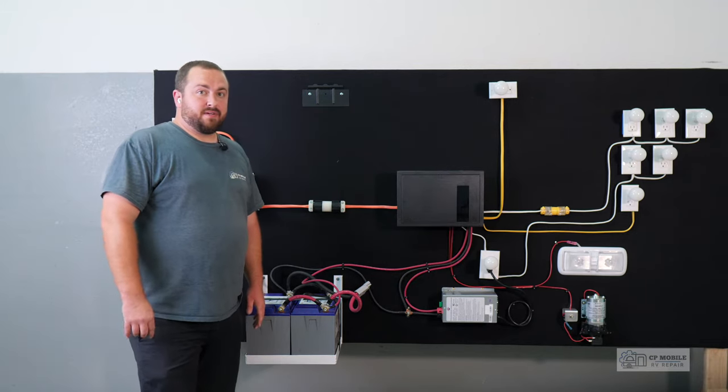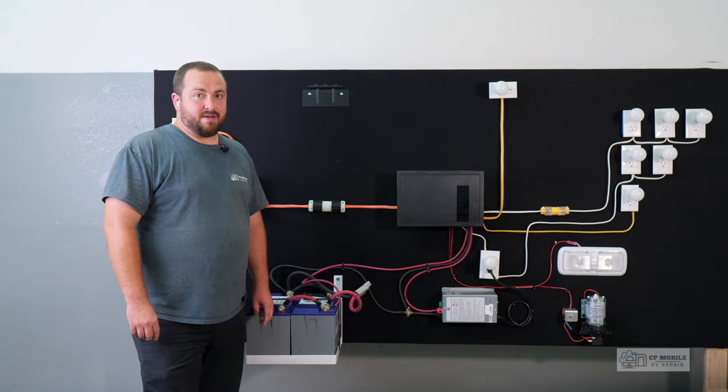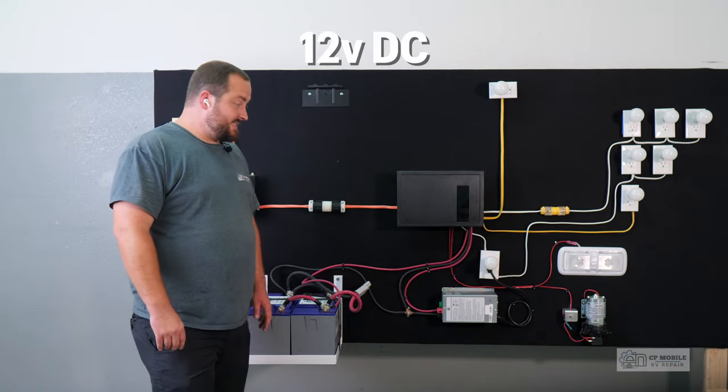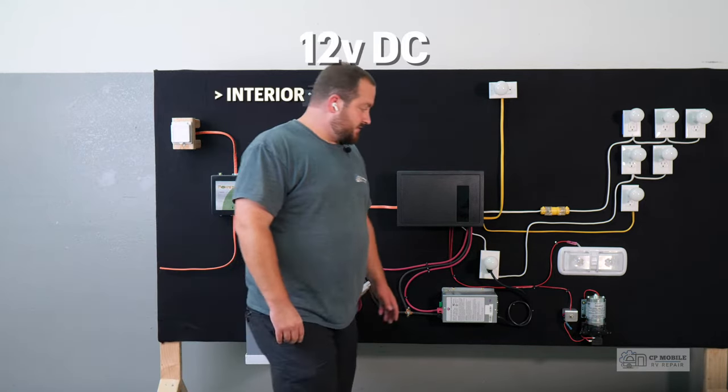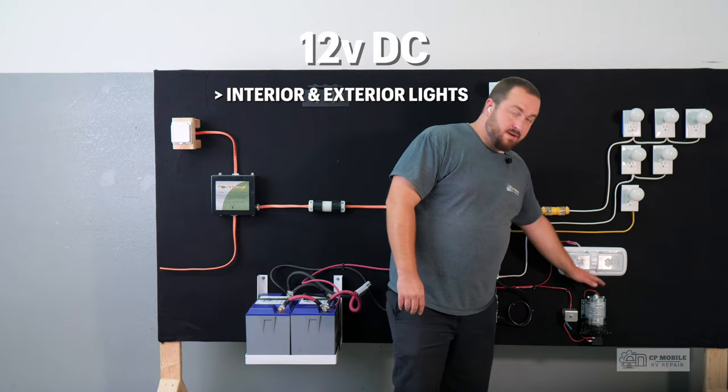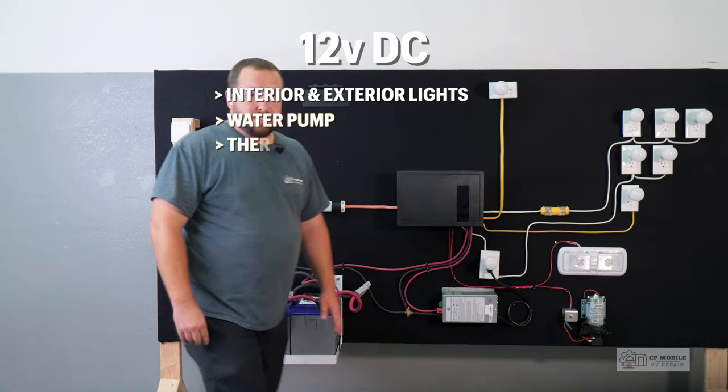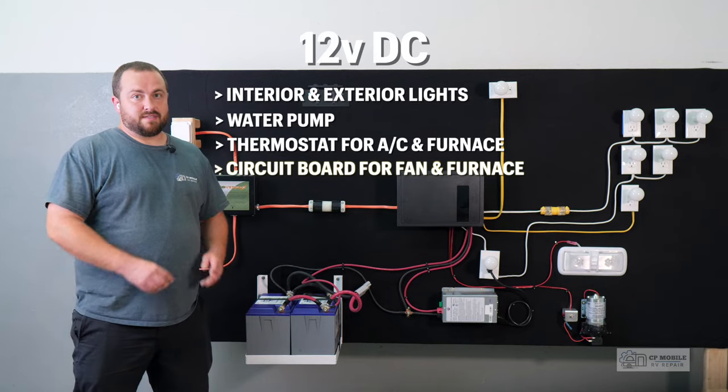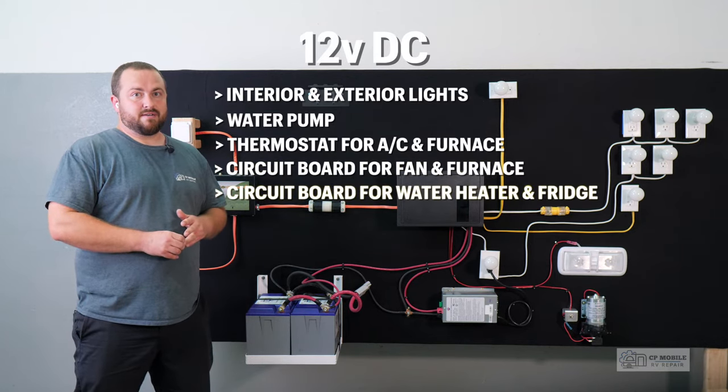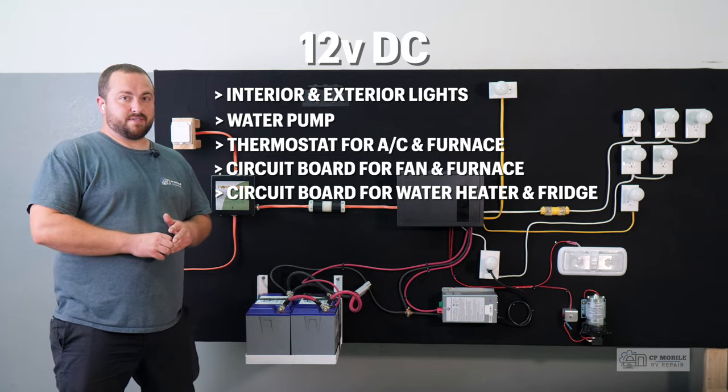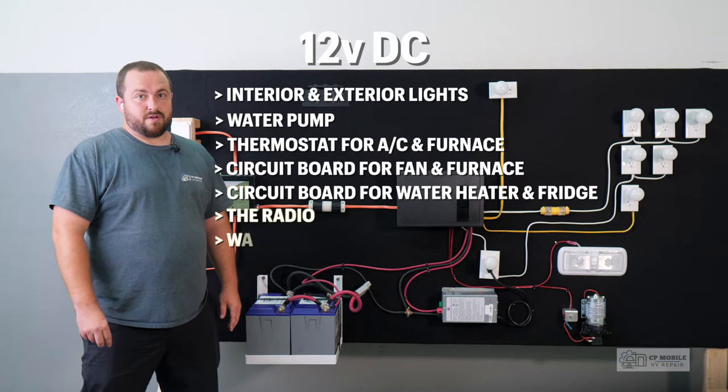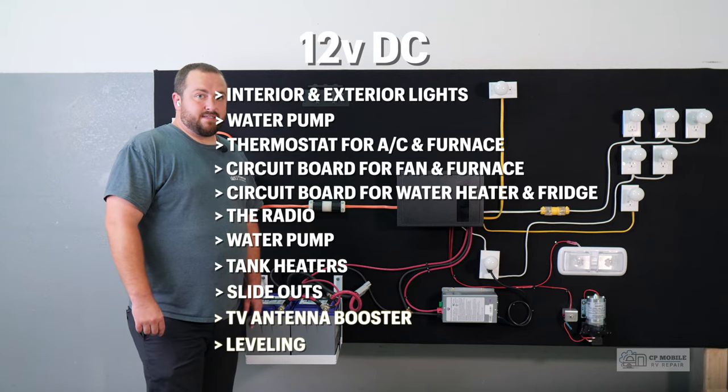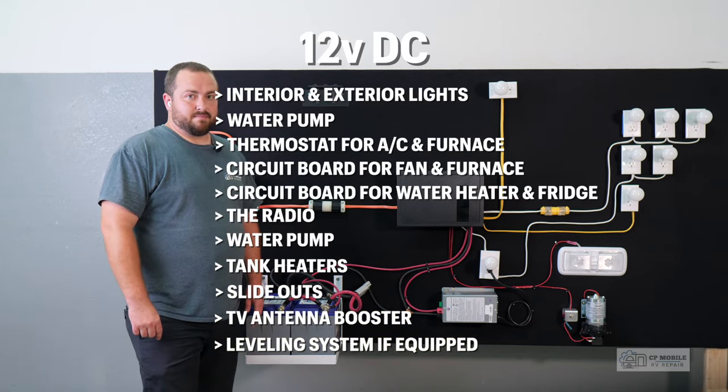First let's quickly go over what components use 12 volt DC power. The 12 volt DC system includes all of the interior and exterior lights, our water pump, the thermostat for the air conditioner and furnace, the circuit board for the fan and furnace, the circuit boards that control the water heater and fridge excluding residential fridges, the radio, the tank heaters, the slide outs, TV antenna booster, and the leveling system if equipped.